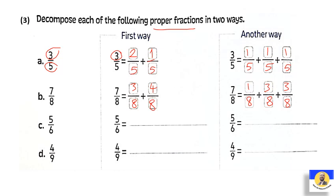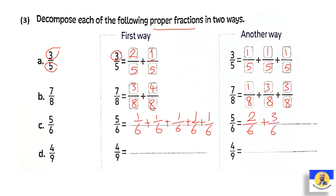Next one: 7 over 8 — أخليها كام وكام؟ ممكن نخليها 3 over 8 plus 4 over 8 — يديوني 7. كمان 7 over 8 ممكن نخليها 1 over 8 plus 3 over 8 — 1 plus 3 equal 4، وبعدين plus 3 كمان عليهم — فيطلعوا معنا 7 over 8. لو معنا 5 over 6: إما 1 over 6 plus 1 over 6 plus 1 over 6 plus 1 over 6 plus 1 over 6 — هاو مني؟ طلعوا معنا 5 unit fractions — أو ممكن 2 over 6 plus 3 over 6. Next: 4 over 9 — ممكن تكون 3 over 9 plus 1 over 9, or 2 over 9 plus 2 over 9, or 1 over 9 plus 1 over 9 plus 1 over 9 plus 1 over 9 — فنخليهم 4 unit fractions.